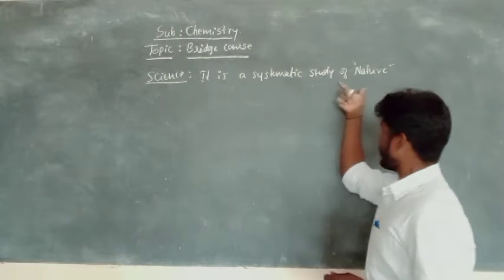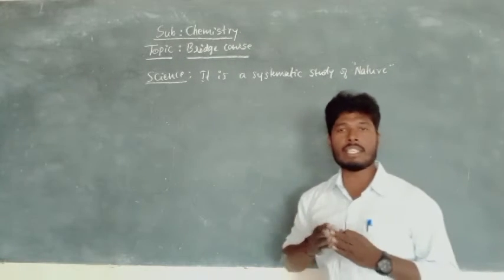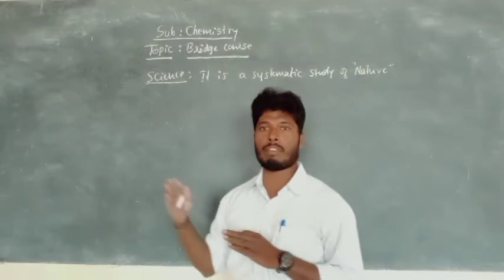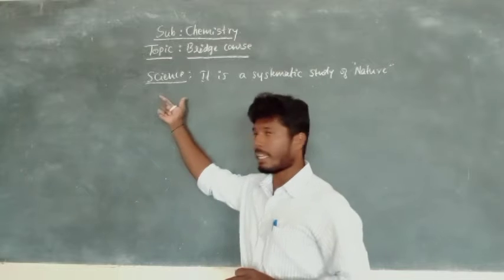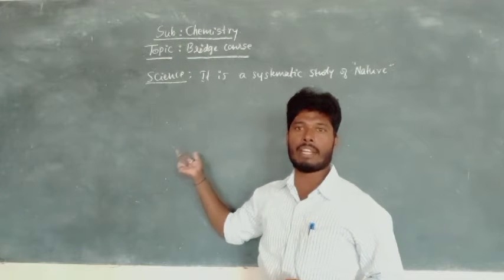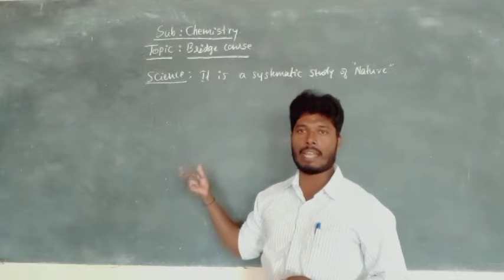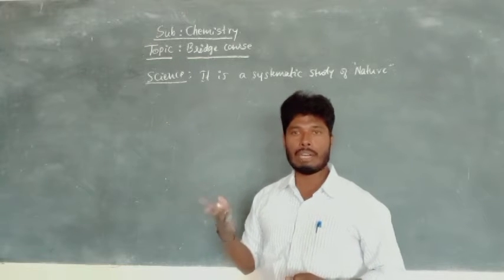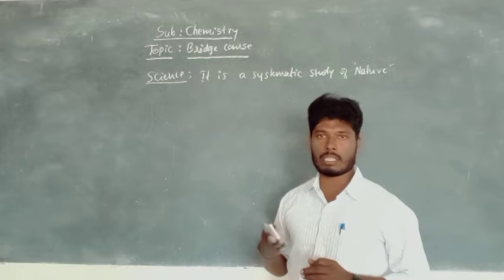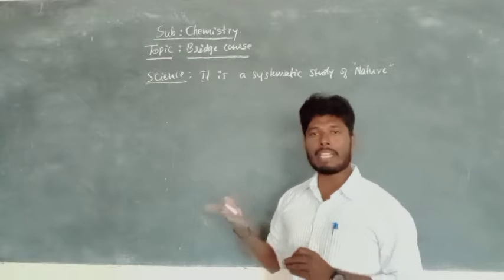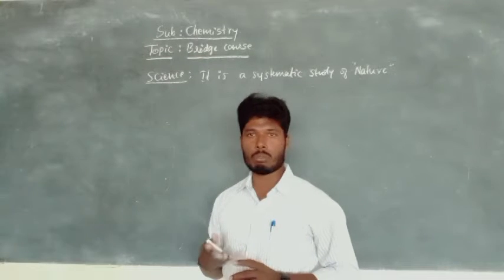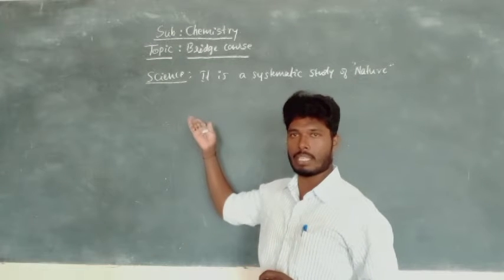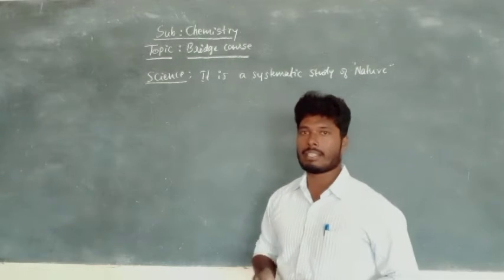It is a study of nature. The nature is a huge one. So to understand all the concepts that will be happening in nature, science can be classified into different branches like physics, chemistry, biology, and so on. To understand all these branches, the basic one is mathematics. All these subjects and branches we call science.